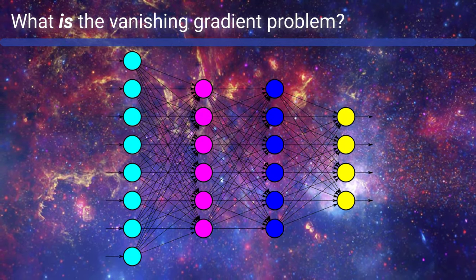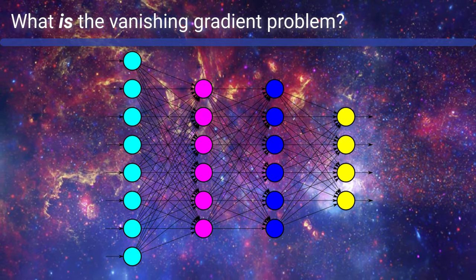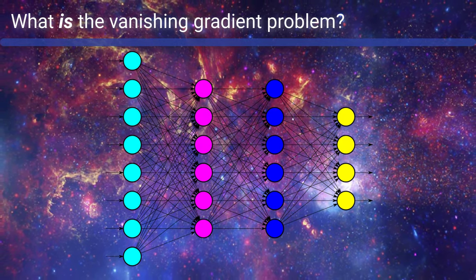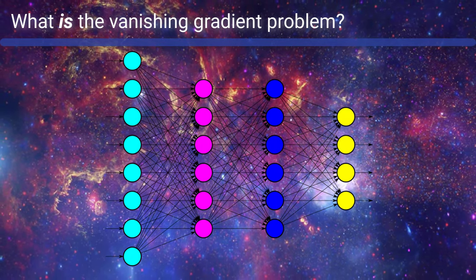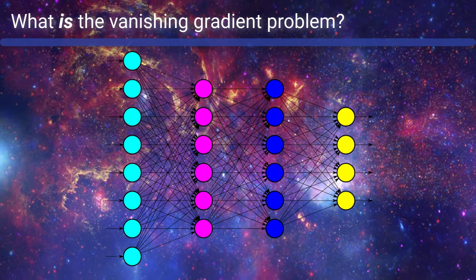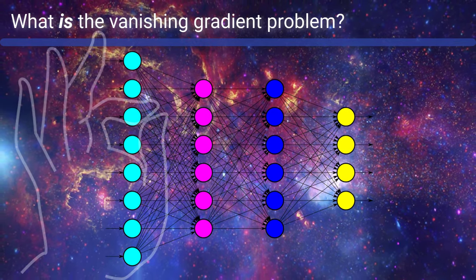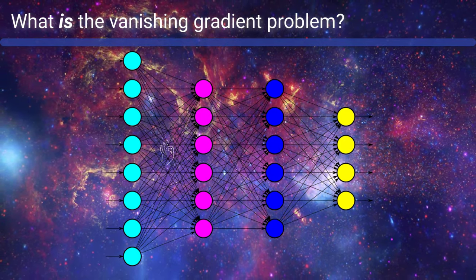Recall that during training, Stochastic Gradient Descent, or SGD, works to calculate the gradient of the loss with respect to weights in the network. Now sometimes, and we'll speak more about why this is in a bit, the gradient with respect to weights in earlier layers of the network becomes really small, like vanishingly small. Hence, vanishing gradient.